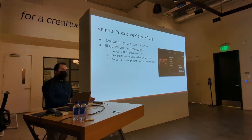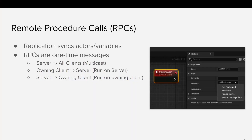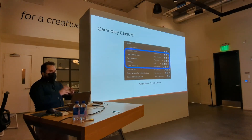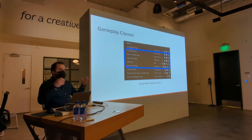In addition to syncing state, there's also event-based messages — remote procedure calls, or RPCs. If you're familiar with Blueprints and using events in the event graph, all you have to do is set the replicates dropdown on the event to say whether it goes from the server to all clients (multicast), from the owning client back to the server, or from the server back to the owning client. That's the basics of how stuff gets moved from a network perspective.